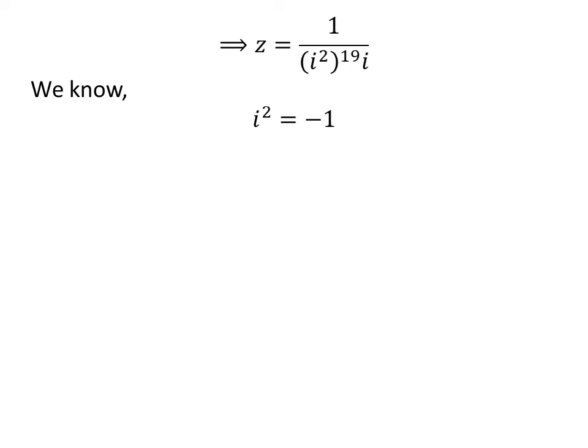We know square of imaginary unit i is minus 1. So, application of the above property of imaginary unit gives us z is equal to 1 upon minus 1 raised to the power of 19 times i. As minus 1 raised to the power of 19 is equal to minus 1, so z is equal to 1 upon minus i.